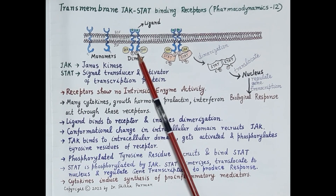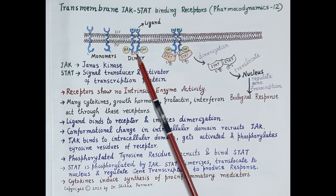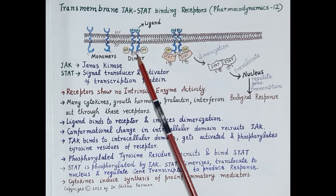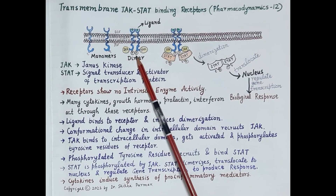This activated JAK further phosphorylates the inactive tyrosine residues present on the intracellular domain of the receptors. Phosphorylation of these tyrosine residues is shown here by the capital letter 'P.' Phosphorylation of these tyrosine residues activates them.